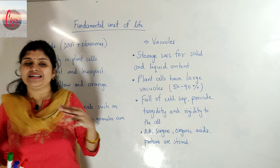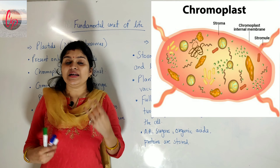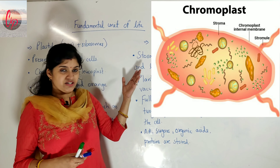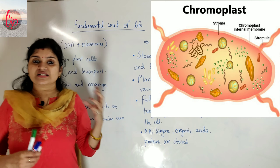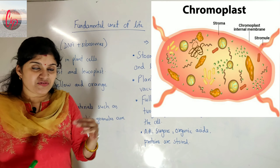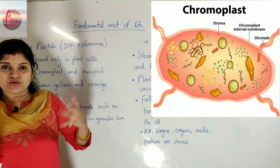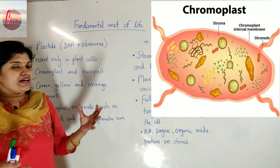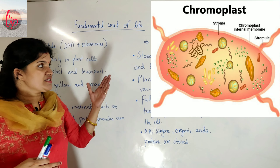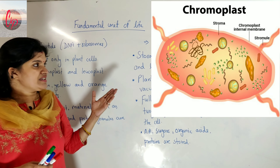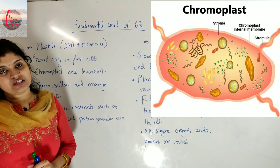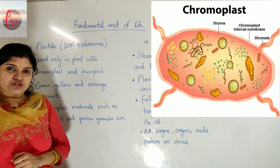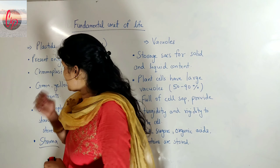Regarding the structure of chromoplast, it consists of many layers or membranes which are embedded in a material called stroma. As you can see in the structure here, the chromoplast consists of various membranes surrounded by this medium called stroma.